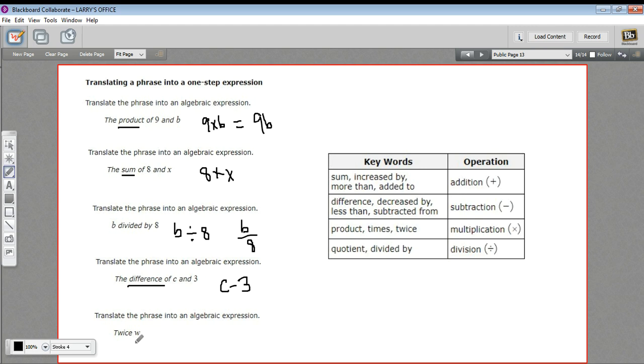And the last one here says twice w. Twice means two times. So this is two times w, which we would just write as 2w.